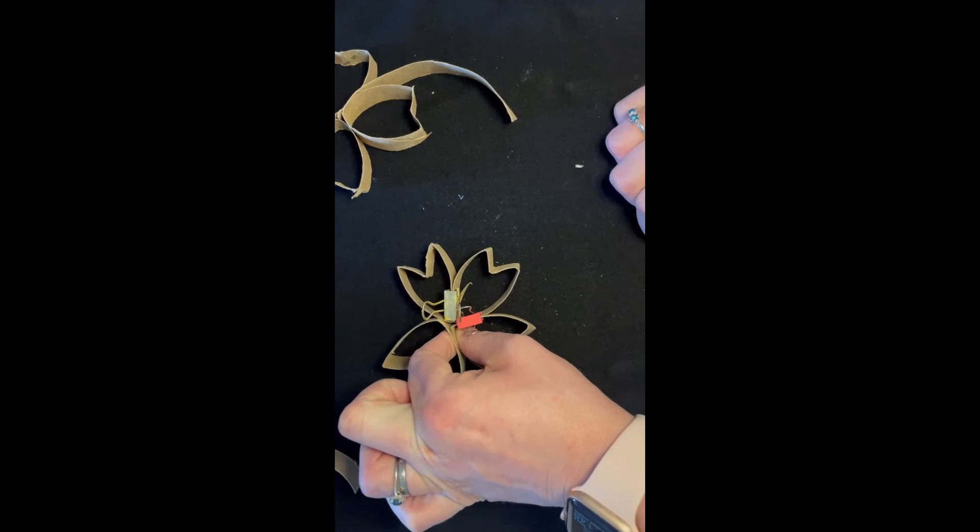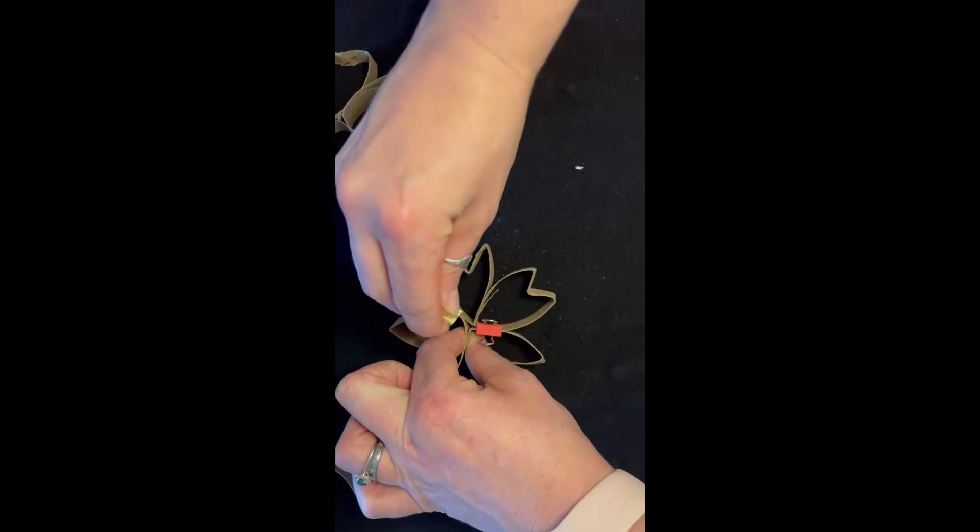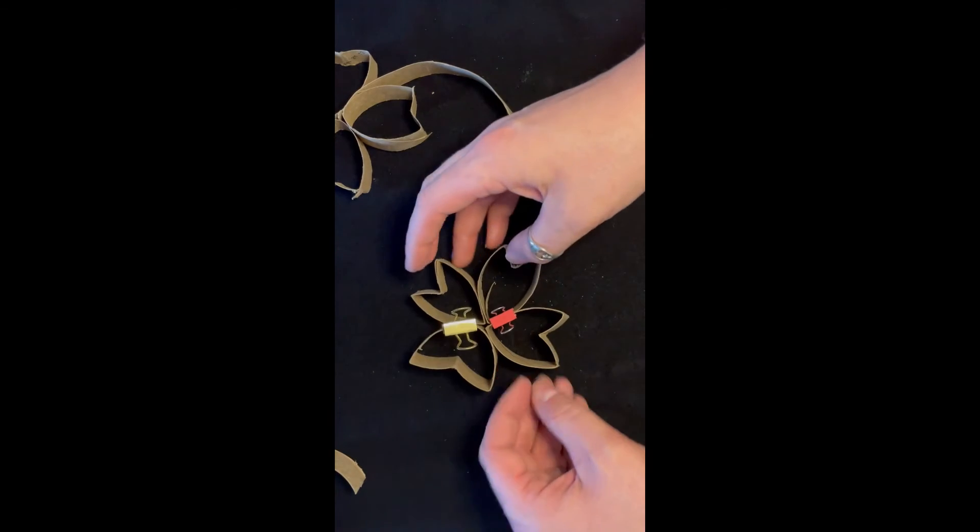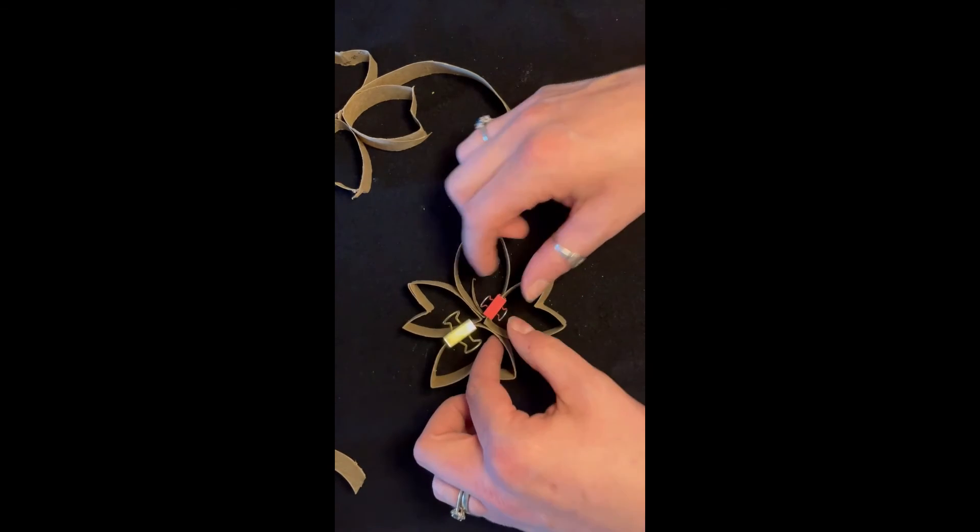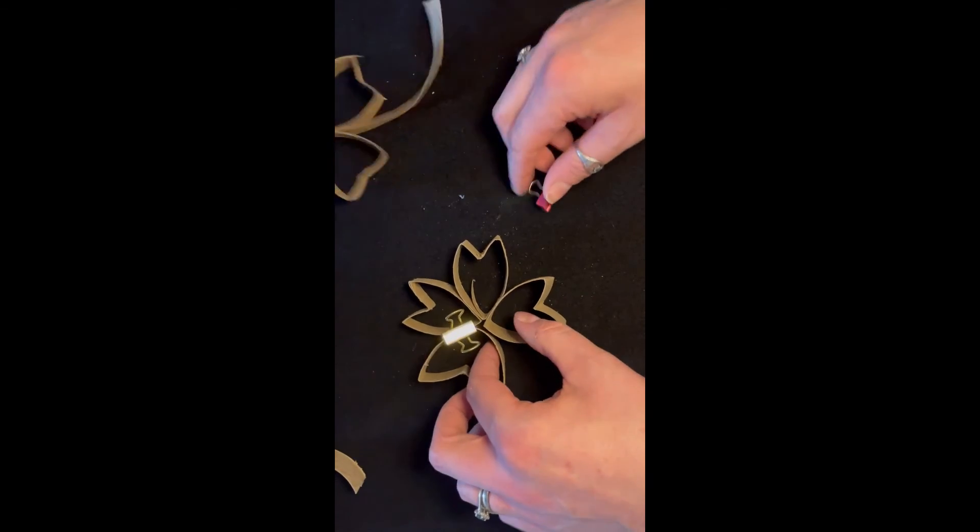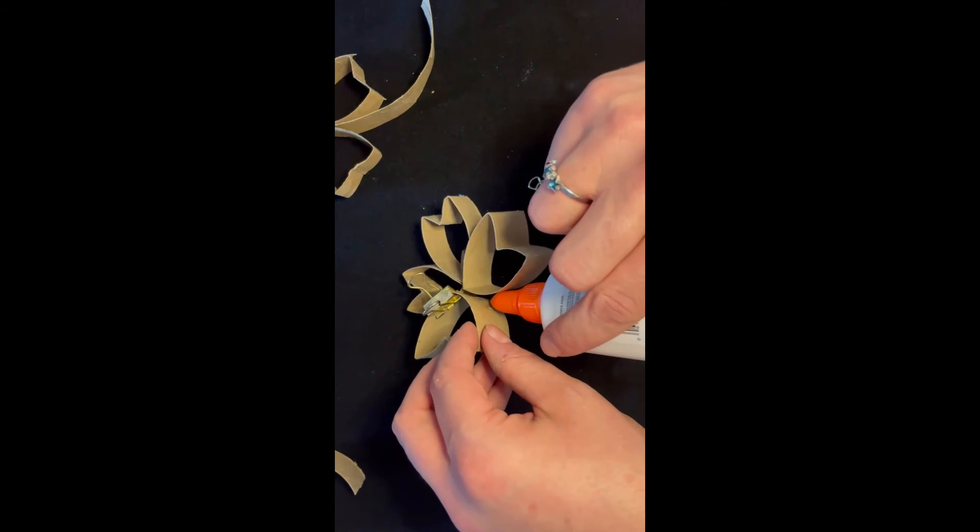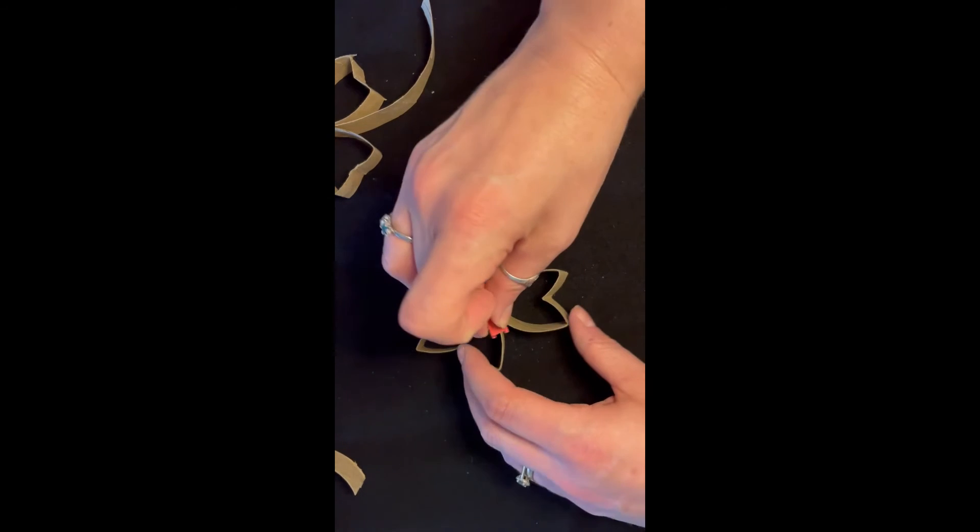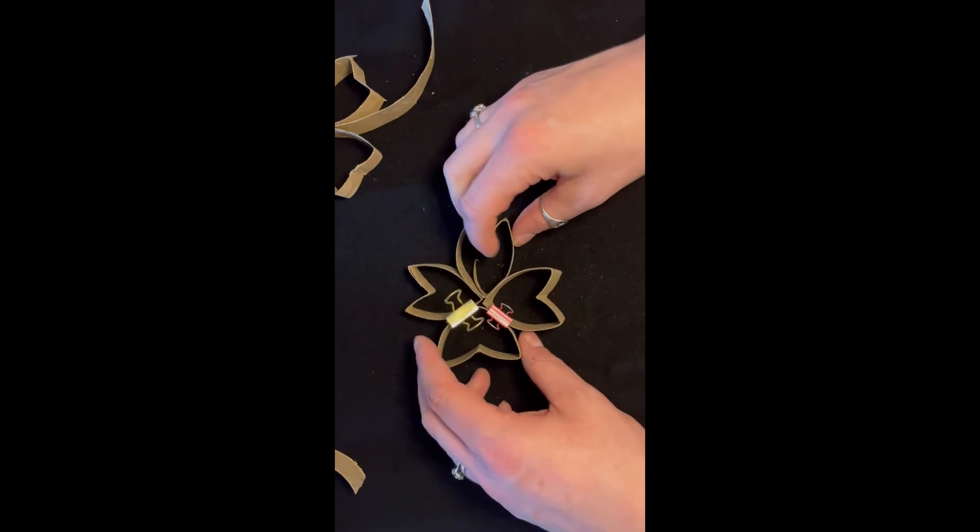And so that's what I'm doing to hold it together. So I'm going to do one side and then I can binder clip it with the other side. So there you go. I have a cute little shamrock here. I'm going to clip them together. There you go.